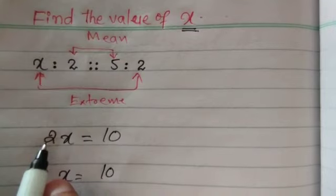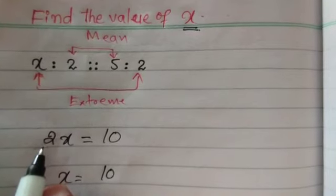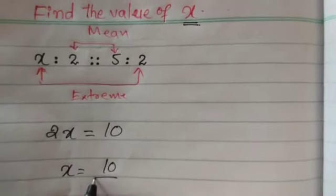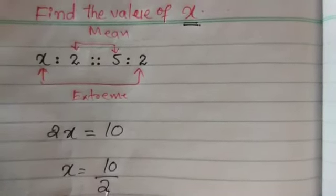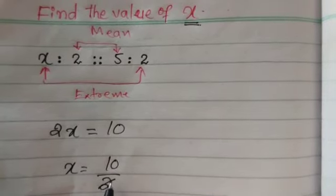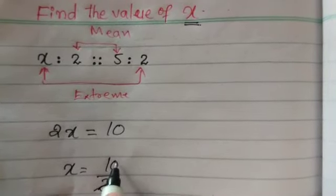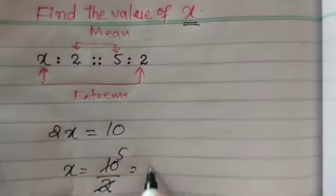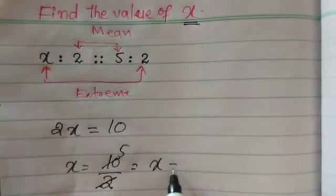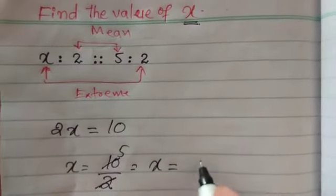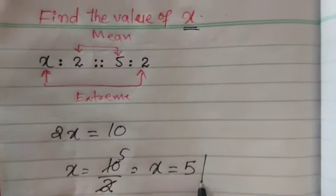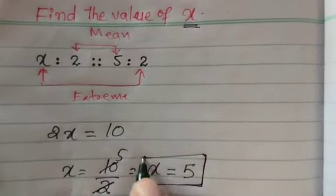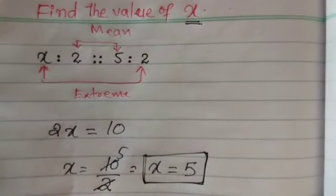Hence, x is equal to 5. That means, x is equal to 5. Now, I will find the value of x is 5.